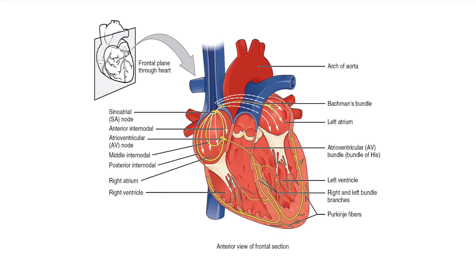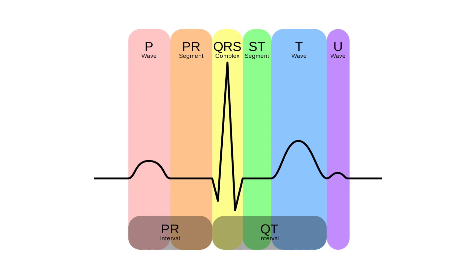The AV node then travels down into the septum of the heart and branches off into the bundle of His. The bundle of His separates into the left and right sides of the lower ventricles. At the end of the bundle of His, there are fiber-like projections called Purkinje fibers that contain Purkinje cells. The Purkinje cells allow for the electrical impulse of the ventricle, causing ventricular depolarization — this is what gives you the QRS on a 6-second rhythm strip.